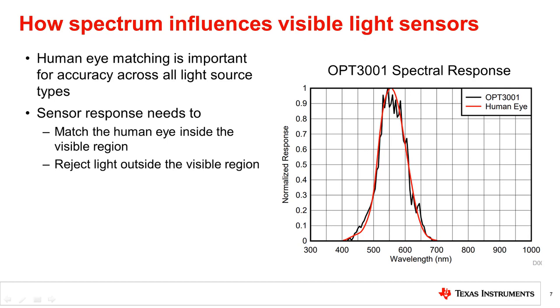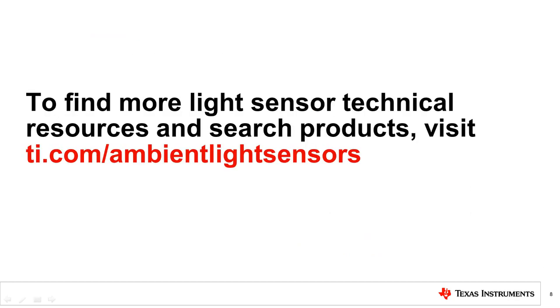In this video, we have seen how the human eye perceives different light sources and the importance of taking the human eye response into account. In future videos, we will formalize how the intensity of light is measured and the units used to compare light intensity as seen by the human eye. To find more light sensor technical resources and search TI products, please visit the link shown.